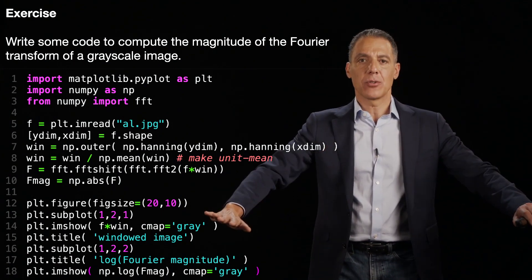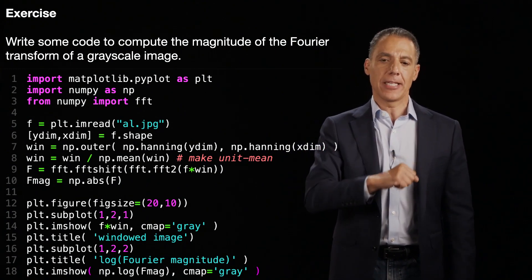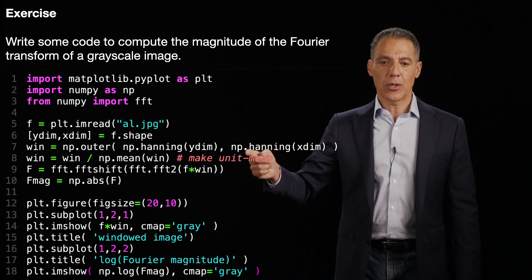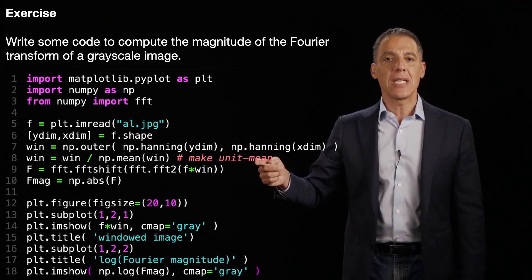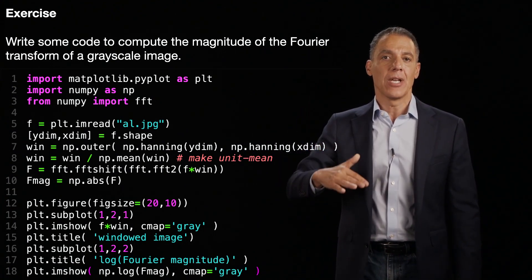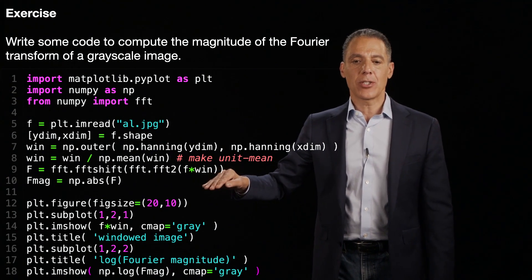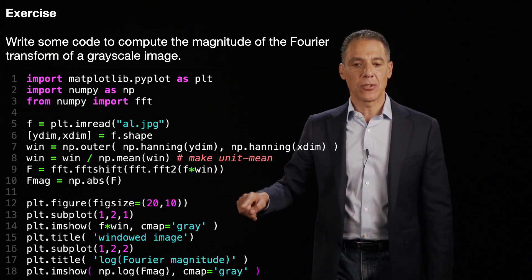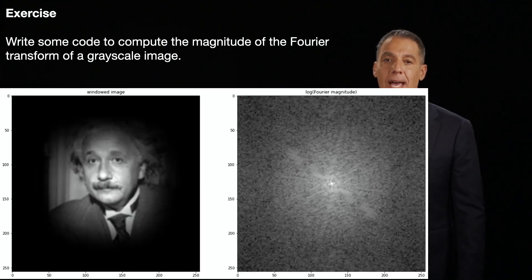And the reason they do that is that if you multiply that window and I'll show you what it looks like in a second, by the image, well, then it's going to force the value to go to zero and it's going to force periodicity in the underlying image. So I'm going to create this window right here. I'm going to make the window a unit mean. So I don't change the amplitude of the image. I don't want to multiply it by a value greater than one or less than one. I'm going to compute the Fourier transform of the image times the window, compute the absolute value and then display the log. So let's see what happens now.